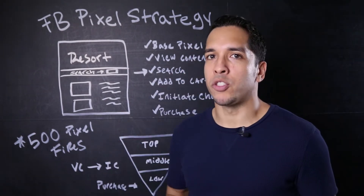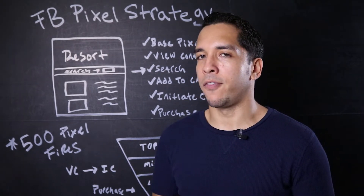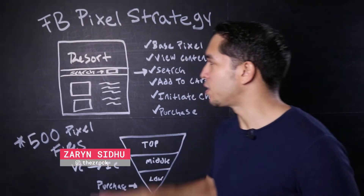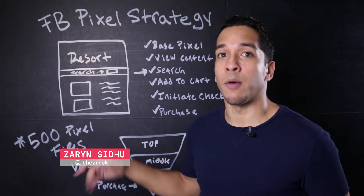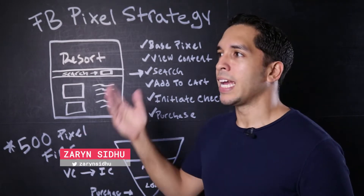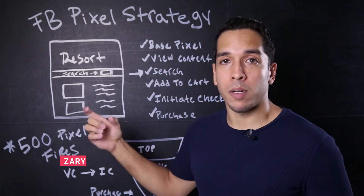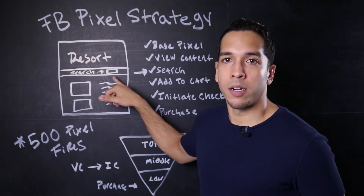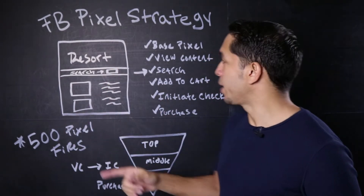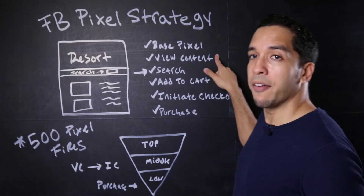What we were trying to do is drive bookings for this business. The resort was a little bit different because instead of renting rooms in a hotel, you could actually rent a home. Their strategy was pretty much to have the base pixel across all the pages, and their view content standard event for Facebook on the different product pages. When you first went to the website, there was a search bar where you could type in the dates and press a search button — we had that tagged with a search event. Depending on what home you landed on, we would have the view content pixel.